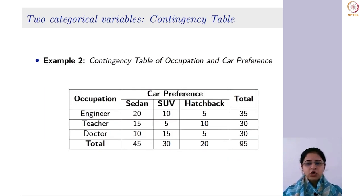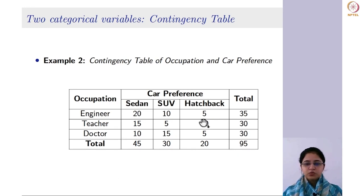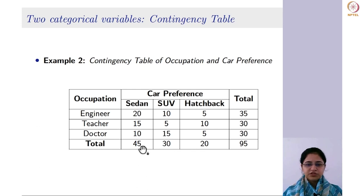Similarly, consider another example of occupation and car preference. Occupation is a categorical variable with categories engineer, teacher, and doctor, and car preference includes sedan, SUV, and hatchback. The values within the contingency table represent the counts corresponding to each combination. The column totals show that 45 prefer sedan, 30 prefer SUV, and 20 prefer hatchback out of 95 individuals. The row totals show 35 are engineers, 30 are teachers, and 30 are doctors.